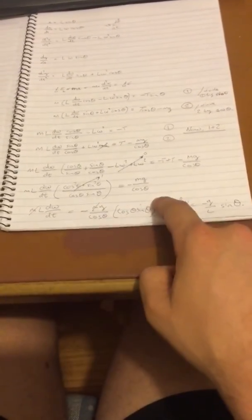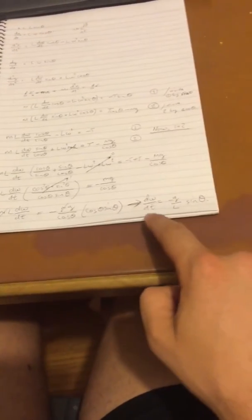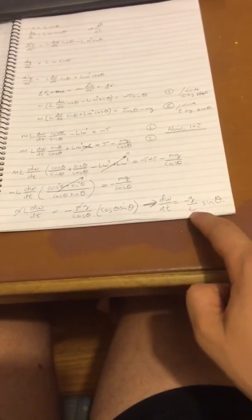Now you multiply through by that, cosines cancel, and you're left with d omega dt equals minus g over L sine theta.